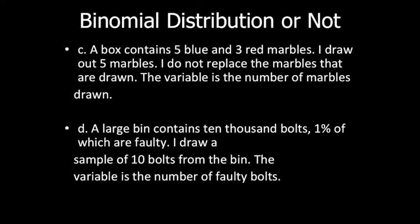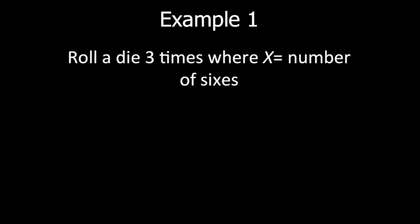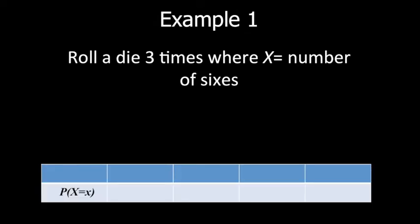Now let's have our first example. The random experiment is rolling a die three times and the random variable is the number of sixes. This is a discrete random variable. The values of the random variable will be 0, 1, 2, and 3 — meaning no sixes, one six, two sixes, or three sixes. Let's construct a probability distribution table.